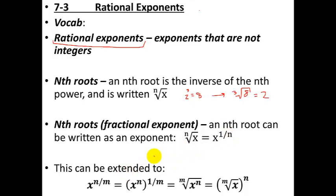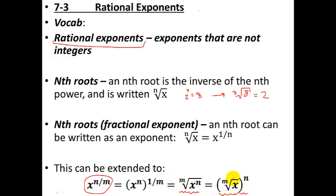We can extend this to any fractional exponent. x to the nth is the first part, and by a power of a power, multiplying n times one over m gives you n over m. So anytime you have a rational exponent — which is a fraction — that's the same as the mth root of x to the n, or the mth root of x raised to the nth power. Either of these forms are appropriate, depending on which one you're trying to use.